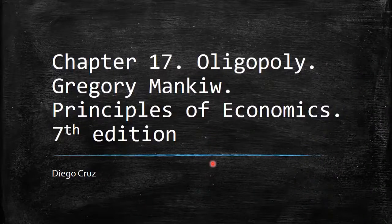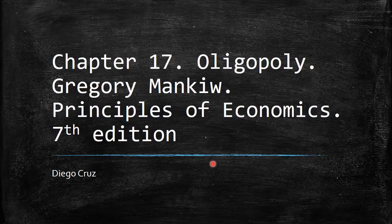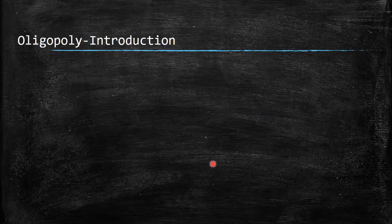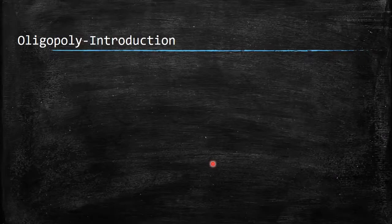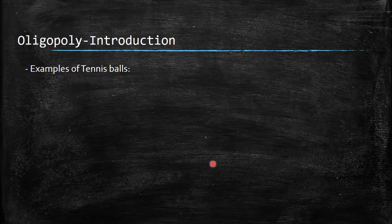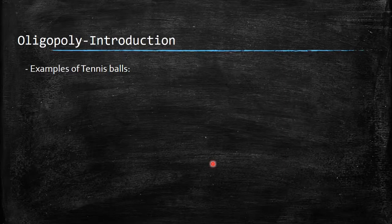Hi everyone, welcome to this new video. This is Chapter 17, and the chapter is Oligopoly, from Gregory Mankiw's book Principles of Economics, 7th edition. In this video we're going to discuss one of the different market structures. Before, we already saw different markets such as perfect competition, monopoly, and monopolistic competition. Now we're going to discuss a new market structure.